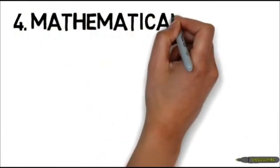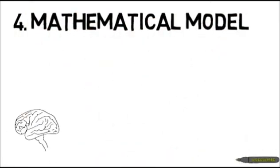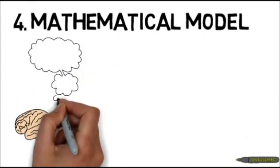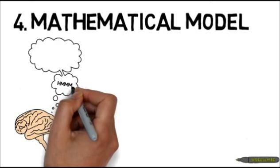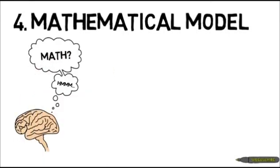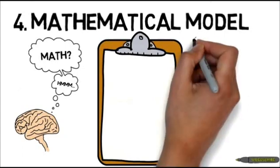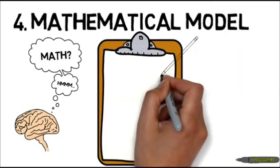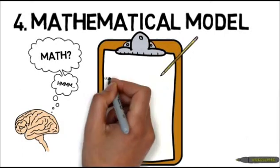Okay, our final step is to make a mathematical model. We're almost done. The mathematical model is going to be a description of our system using mathematical concepts and language. Here, we're going to stop thinking so analytically and start thinking more mathematically. So pull out all those formulas and rules you've learned over the years and apply them here.